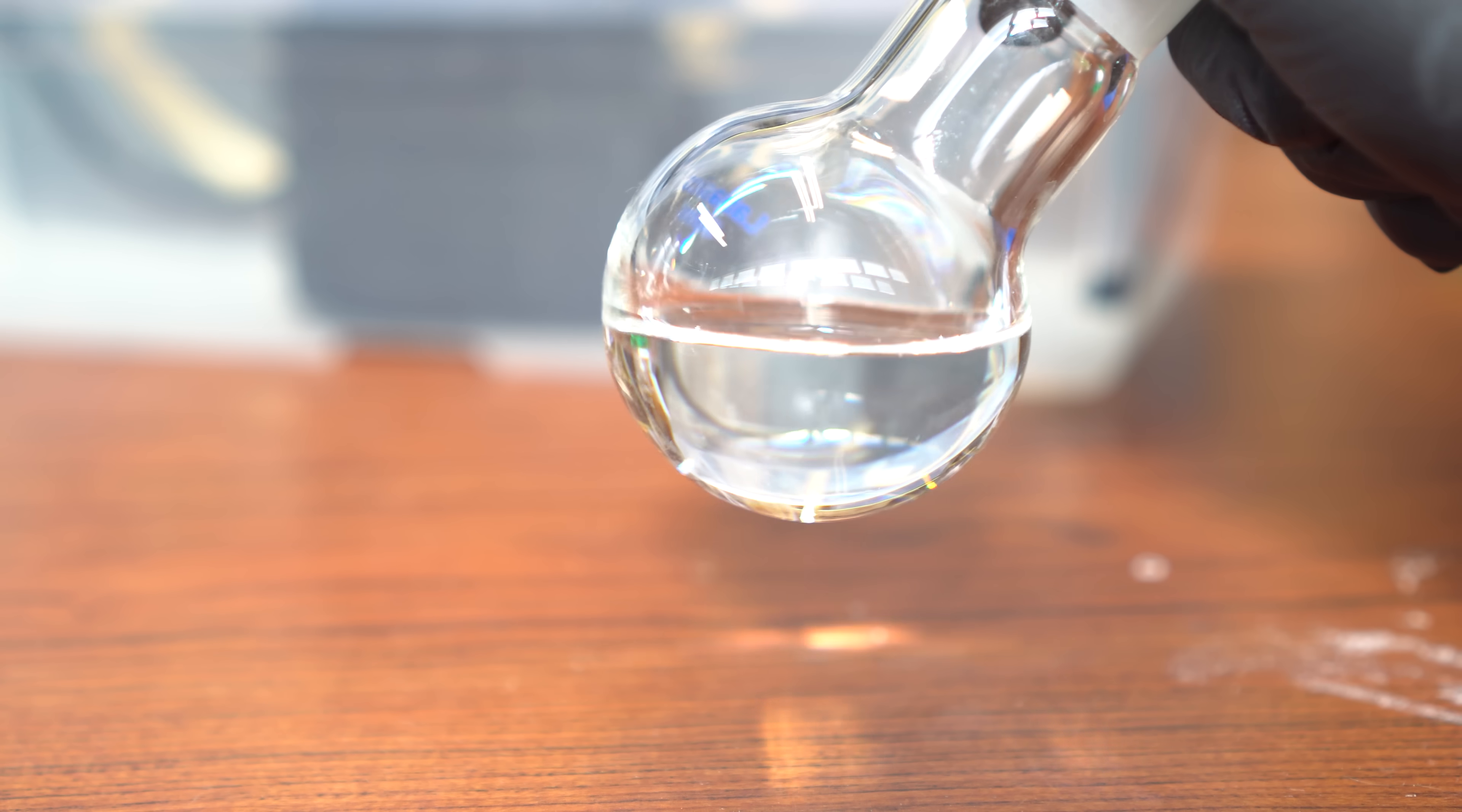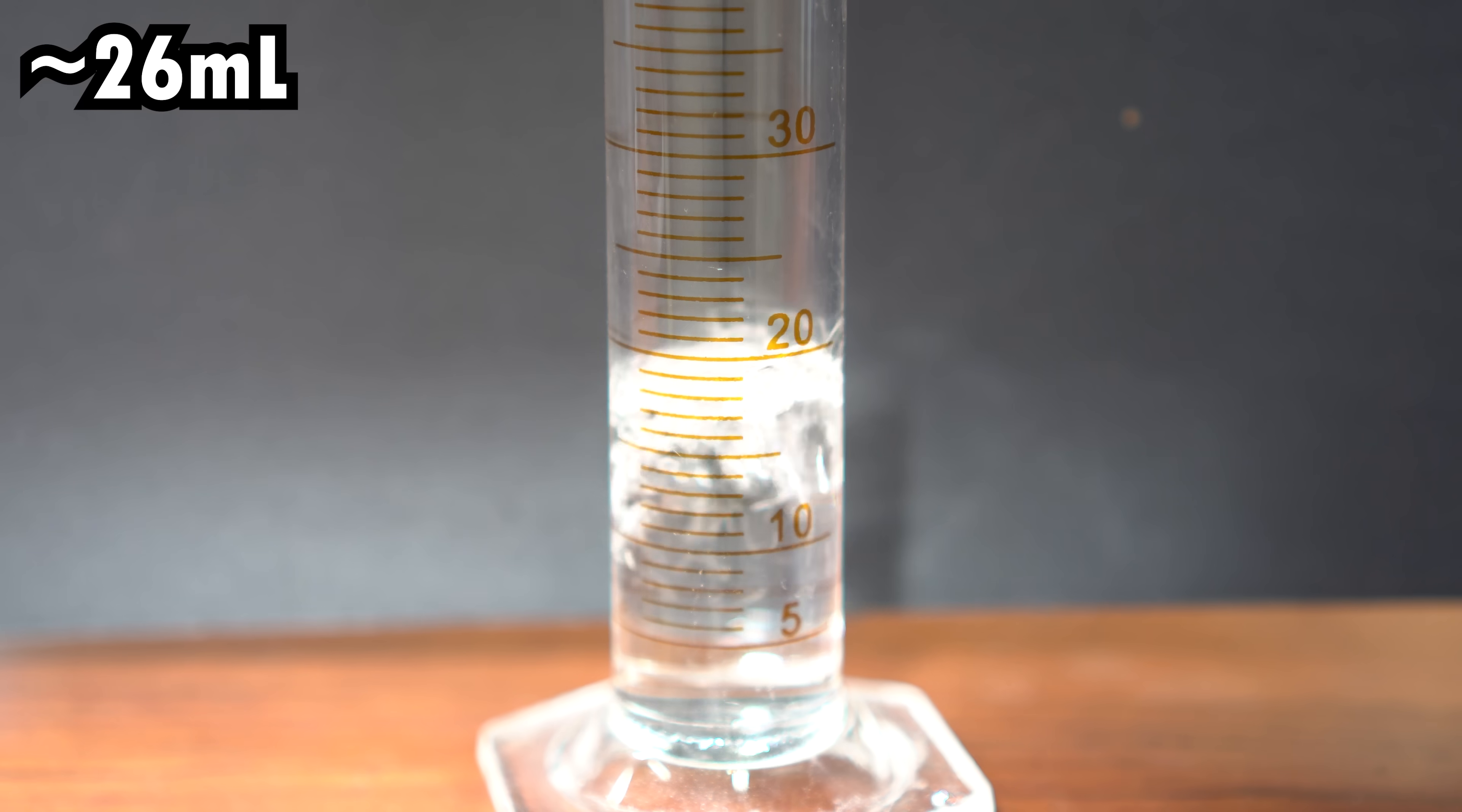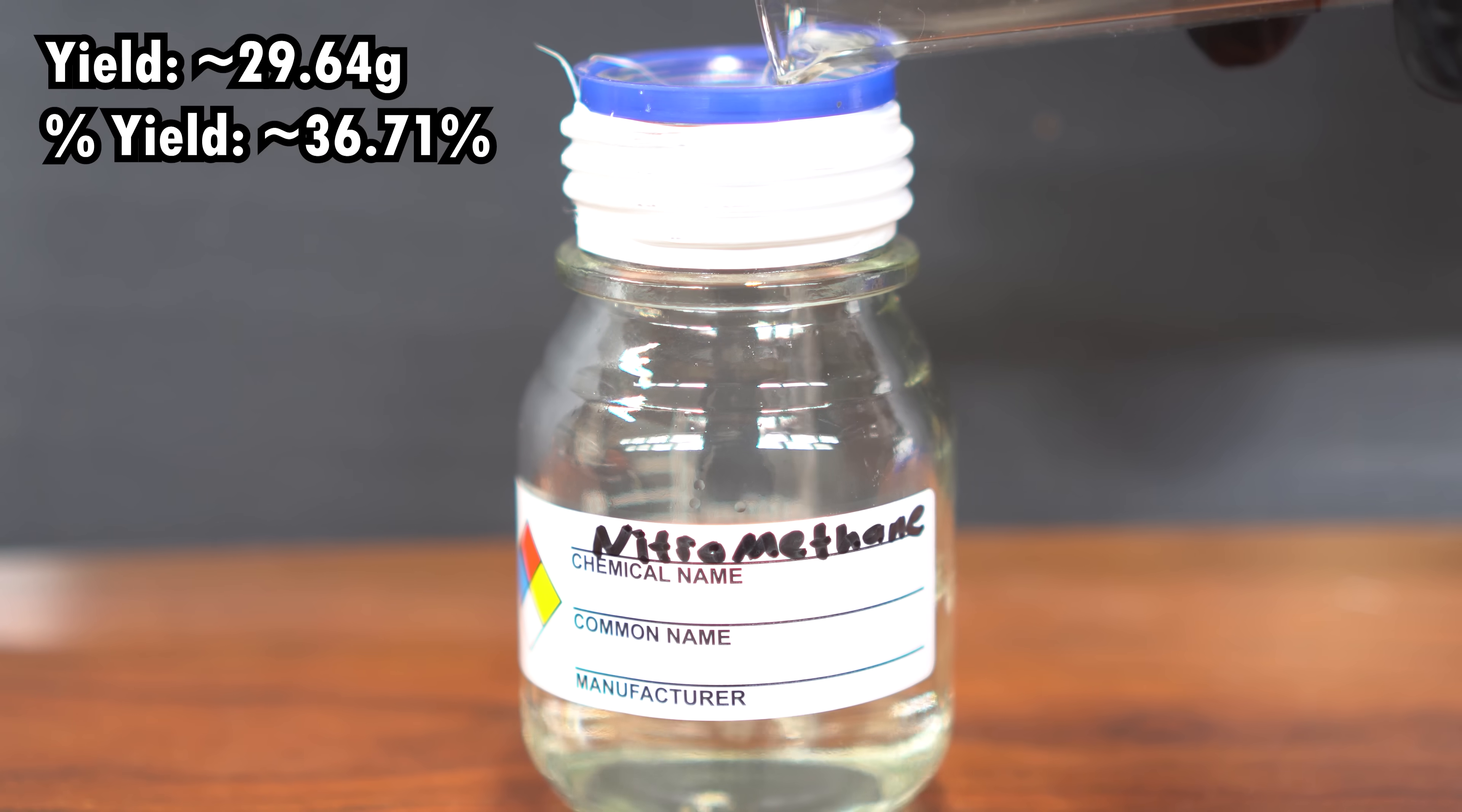Nitromethane is actually quite oily and it has a very unique refractive index. And by unique, I just mean it makes some cool rainbows. Measuring out our total yield, we actually got about 26 milliliters of nitromethane. Purifying the nitromethane did result in a little bit of loss, but that's okay. Our percent yield came out to about 36.71% and that's pretty close to what the procedure got.